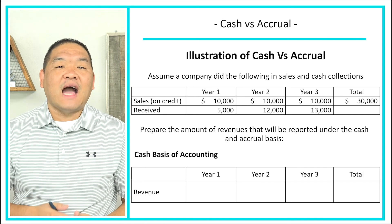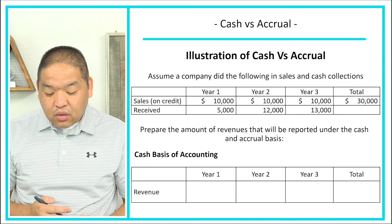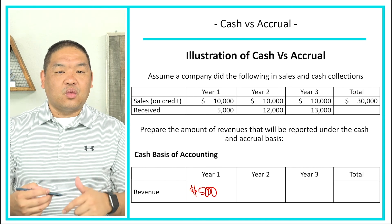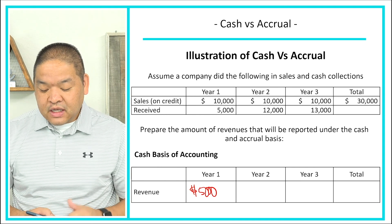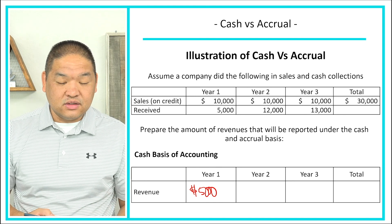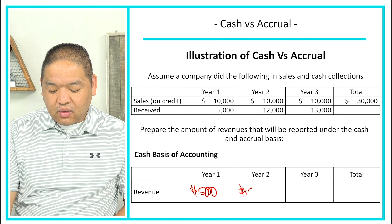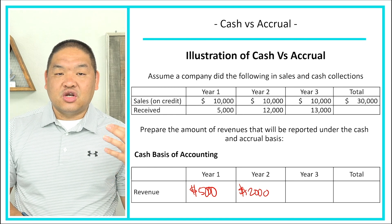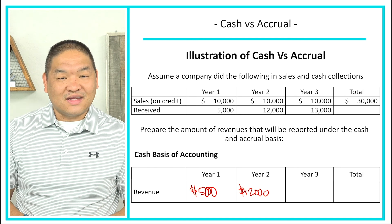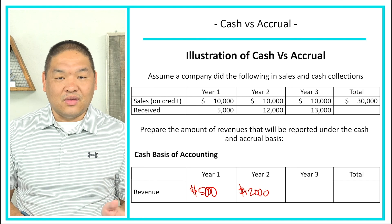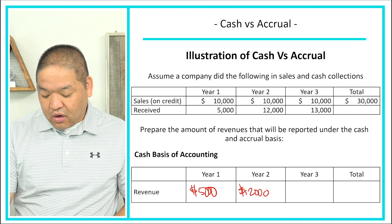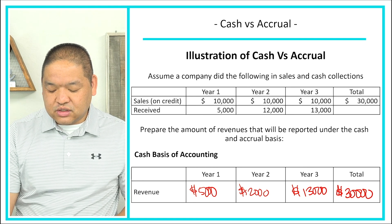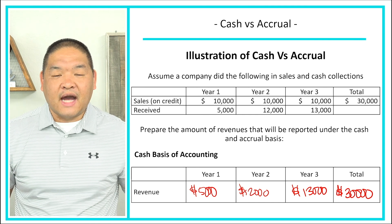Under cash basis, we follow the cash. In Year 1, $5,000 cash was received, so we book $5,000 in revenue. In Year 2, $12,000 was received, so we book $12,000 — even though sales were only $10,000. In Year 3, $13,000 was collected, so we book $13,000. The total across all three years is $30,000.